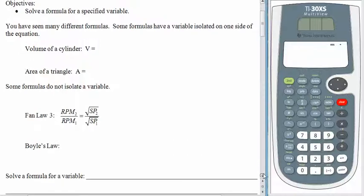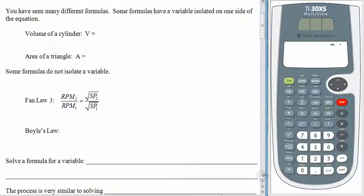Let's find or think back on some formulas that you've seen before. Do you remember the formula for the volume of a cylinder? We needed the area of the base pi times the radius squared multiplied by the height of the cylinder. Hopefully you remember the area of a triangle is one-half the base times the height. And so these are examples of formulas that have a variable isolated on one side of the equation. The V here is all by itself and the A over here is all by itself.